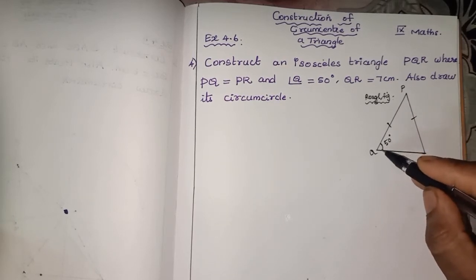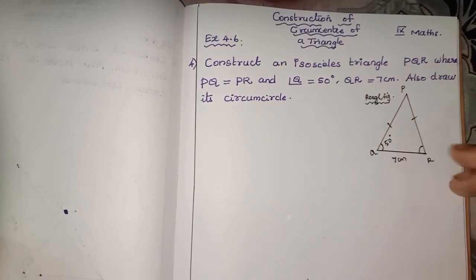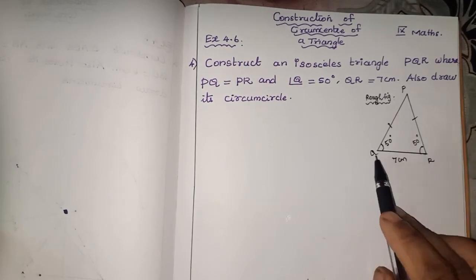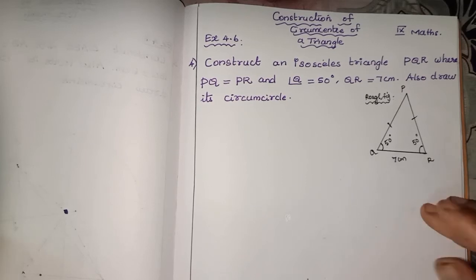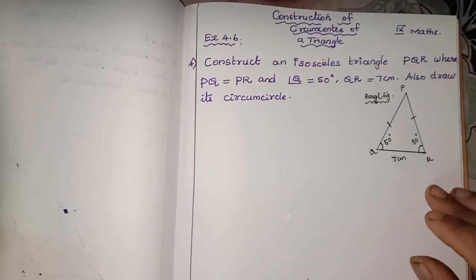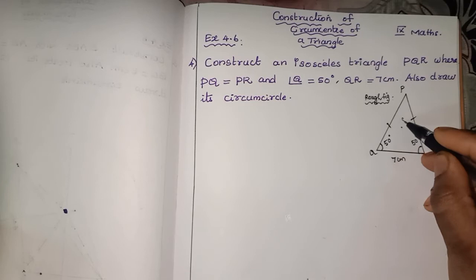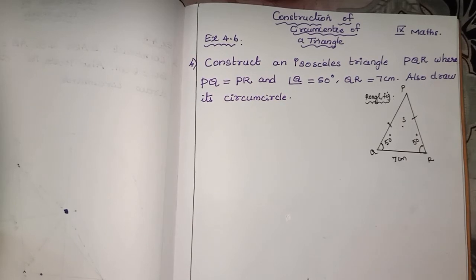The angle Q is 50 degree. So I have taken like this. This is an acute angle triangle. For acute angle triangle, circumcenter lies inside. For obtuse angle triangle and right angle triangle, for right angle triangle it's the midpoint of the hypotenuse. You have to remember this, it is very important.